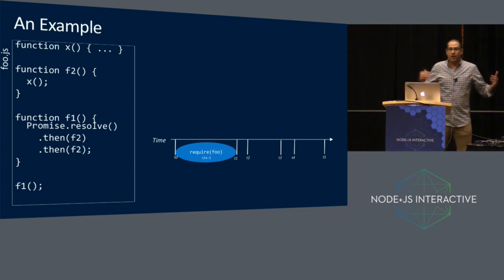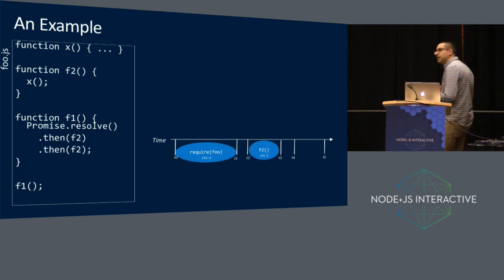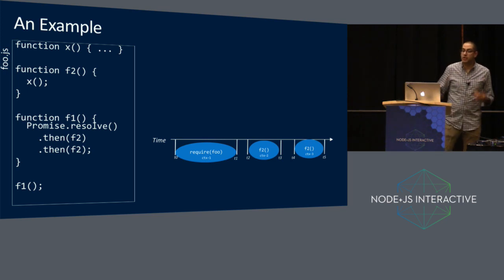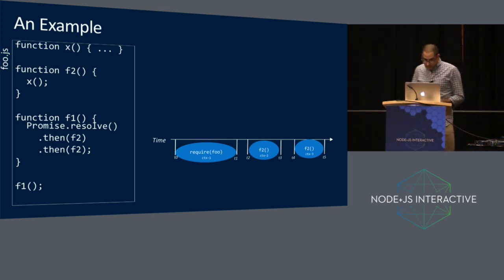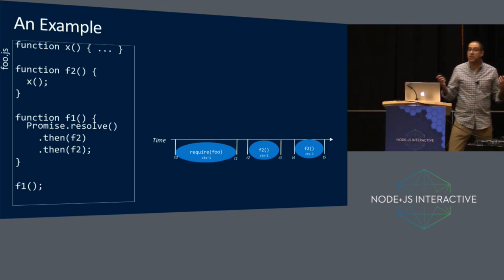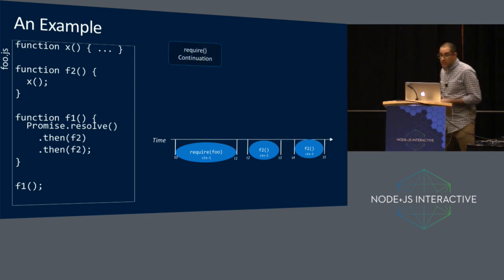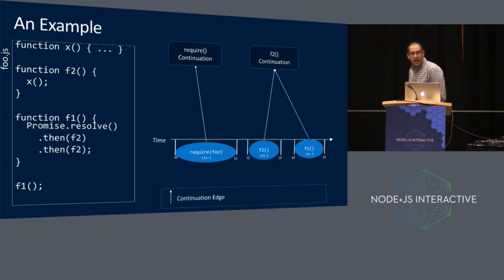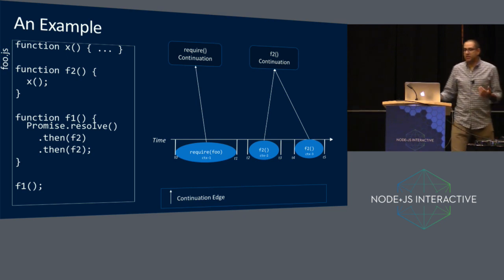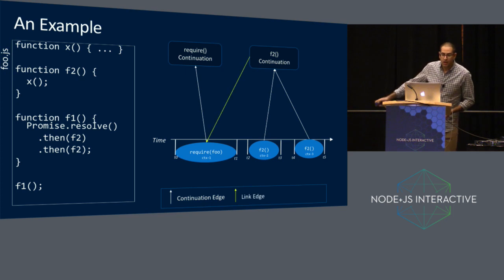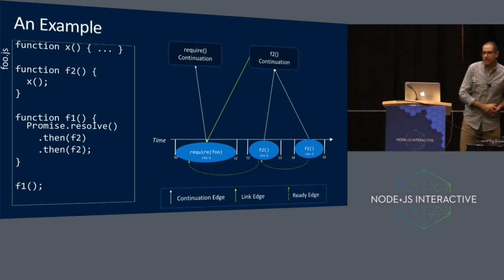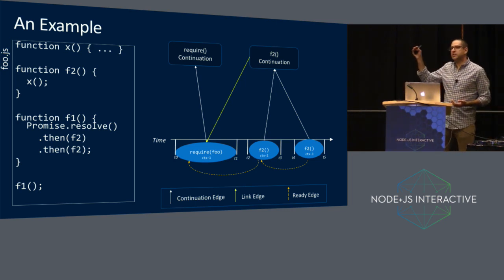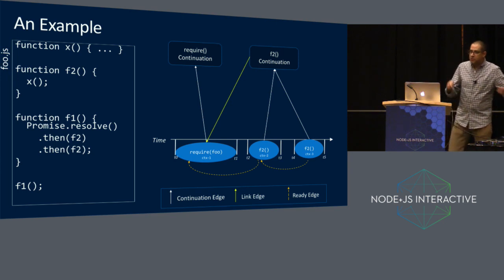On the timeline, you'd see require of foo — that would be your first context. It would resolve that first promise, which would trigger the first invocation of F2, which would resolve another promise, which would trigger the second invocation of F2. Each context has a pointer back to the continuation that was invoked to create it. So we've got some continuation for require, a continuation for F2, and linkage that points back. We have a pointer from each continuation to the context where it was created — so F2 points to require. And we've got pointers across the promise chain: context three points back to context two, and context two points back to context one.